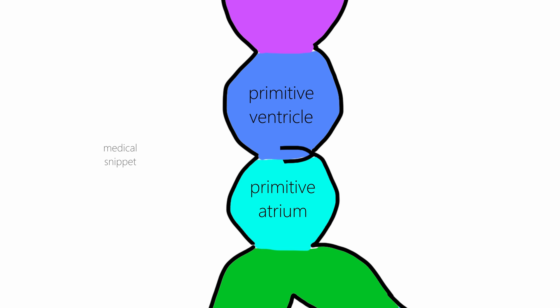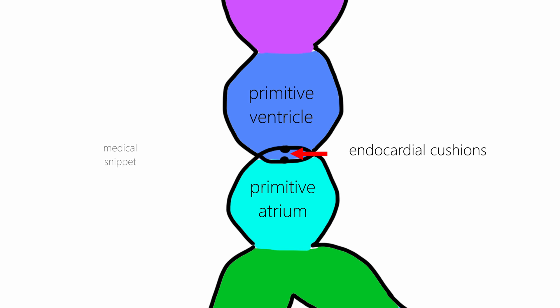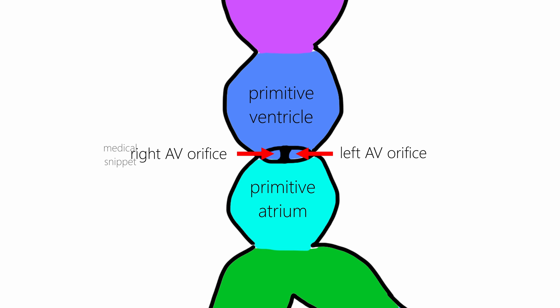The canal between the primitive atrium and ventricle is called the atrioventricular canal. Endocardial or atrioventricular cushions develop at the anterior and posterior part of the AV canal, and then fuse to form the septum intermedium. The septum intermedium divides the atrioventricular canal into two channels: the future right and the future left atrioventricular orifices.